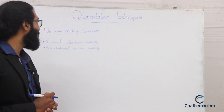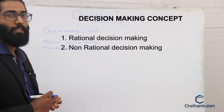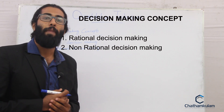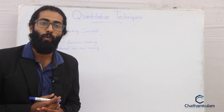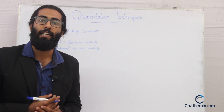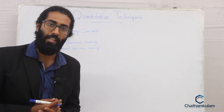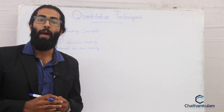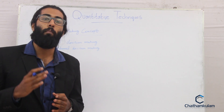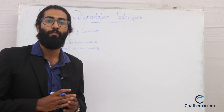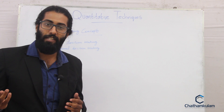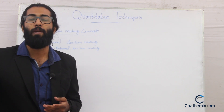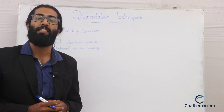Next we will see the decision making concepts. There are basically two types: rational decision making and non-rational decision making. When a person makes logical and consistent choices to maximize value, we call it rational decision making. However, it is not always practical due to lack of information. A more realistic approach is the concept of bounded rationality — managers make decisions rationally but are limited by their ability to process information. Therefore, managers make satisficing decisions rather than those that maximize gain, meaning they accept solutions that are good enough.